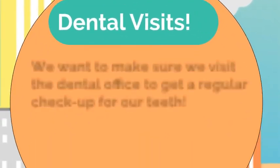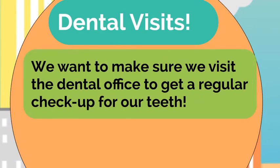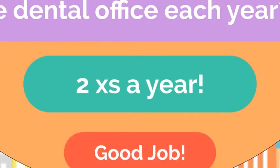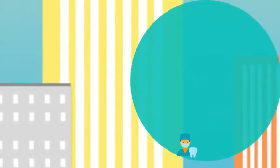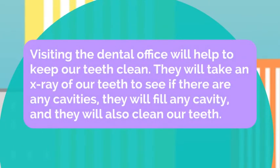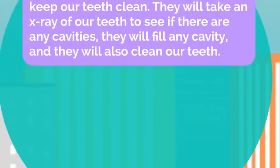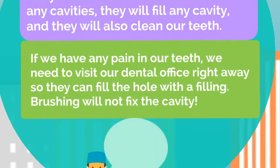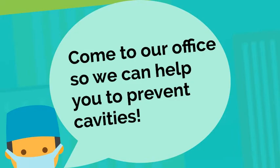Dental visits. We want to make sure we visit the dental office to get a regular checkup for our teeth. Do you know how many times we should go to the dental office each year? I'll give you a hint — it's a special number for today. Two times a year. Visiting the dental office will help to keep our teeth clean. They will take an x-ray of our teeth to see if there are any cavities, fill any cavity, and also clean our teeth. If we have any pain in our teeth, we need to visit our dental office right away so they can fill the hole with a filling. Brushing will not fix the cavity, so let's go to our local dental office to prevent cavities.